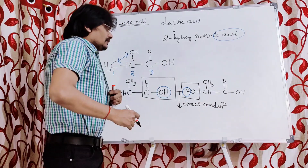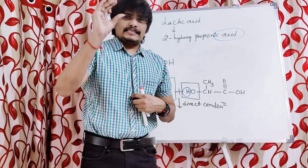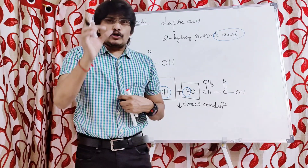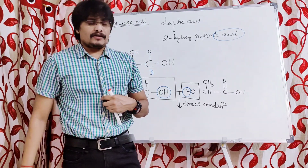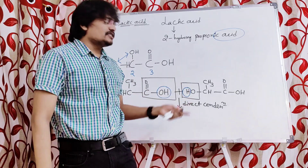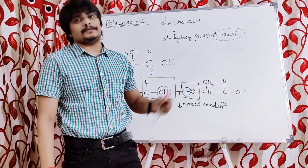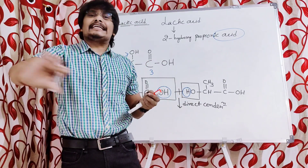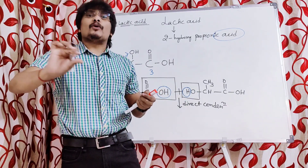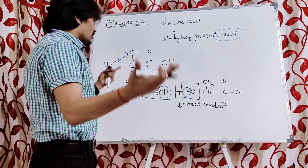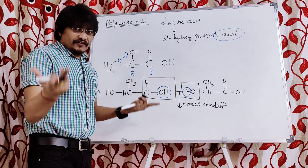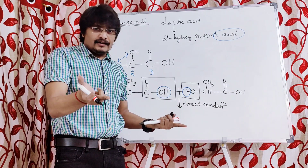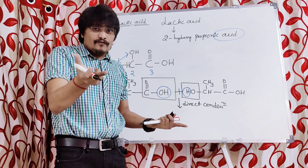Actually, the synthesis of polylactic acid is somewhat complicated. Since it is complicated, in order to make it easy, I have chosen this direct condensation method. With this direct condensation method, you will directly get the structure of polylactic acid without any ambiguity or confusion. We should not write the hydrogen of the hydroxyl group and we should not write the hydroxy of the carboxyl group.